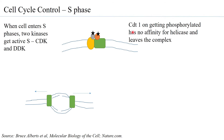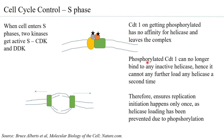In its phosphorylated form, CDT1 no longer has any affinity to bind to the helicase. So CDT1, on getting phosphorylated, leaves the complex. When S-CDK is active, all CDT1 molecules get phosphorylated, and therefore none of the CDT1 can any longer bind to any helicase. Since CDT1 cannot bind helicase, it will not load any helicase onto any of the origins in the DNA.